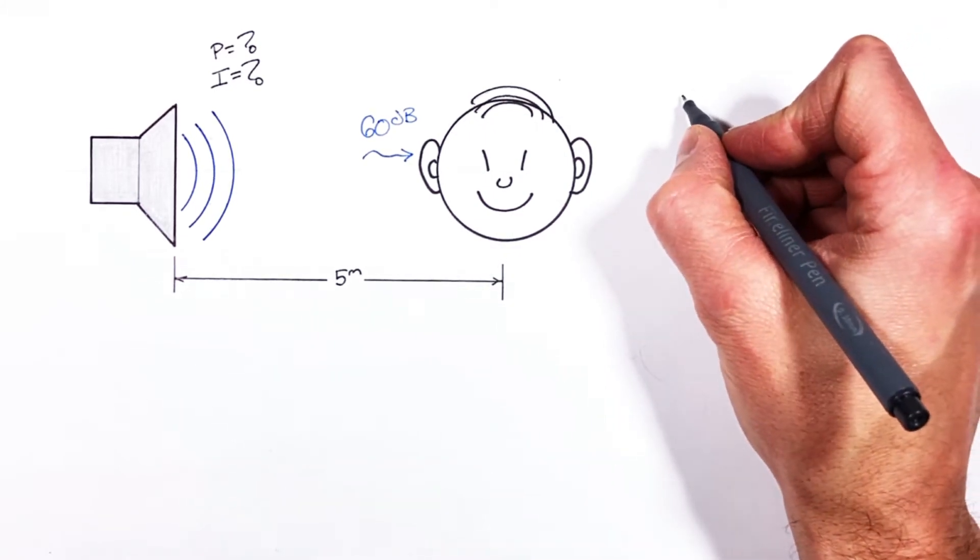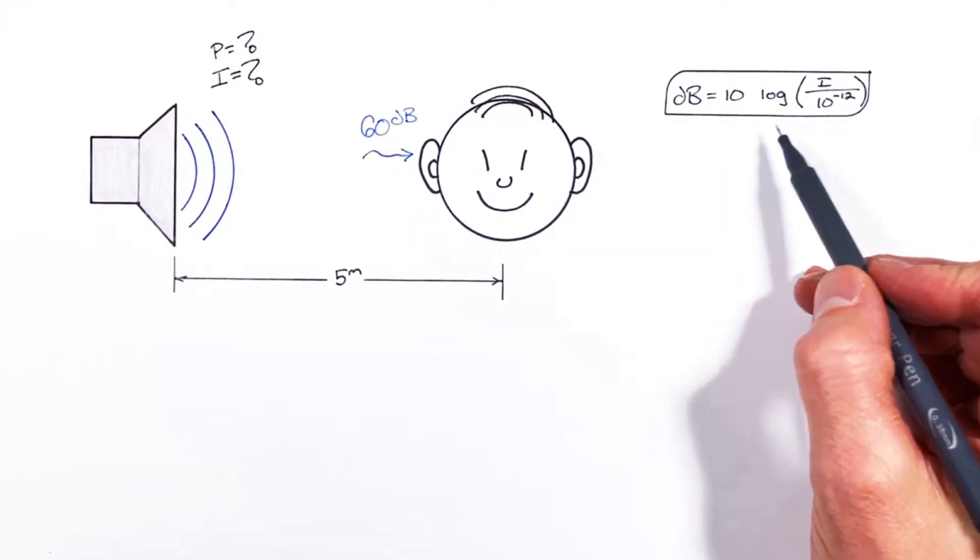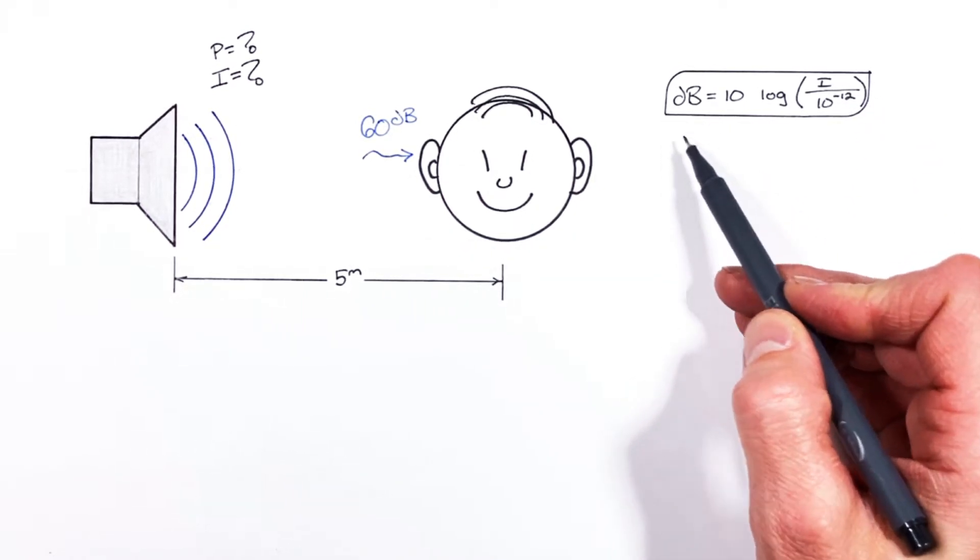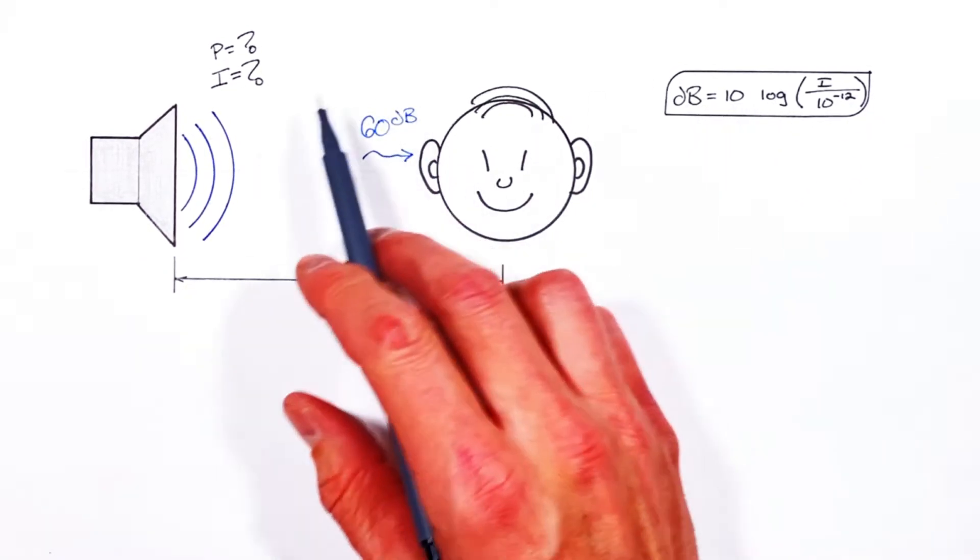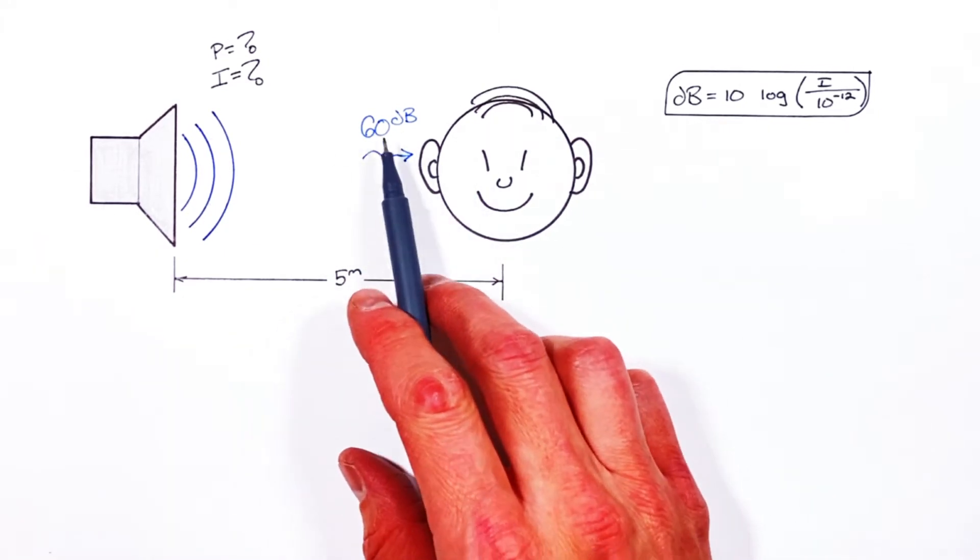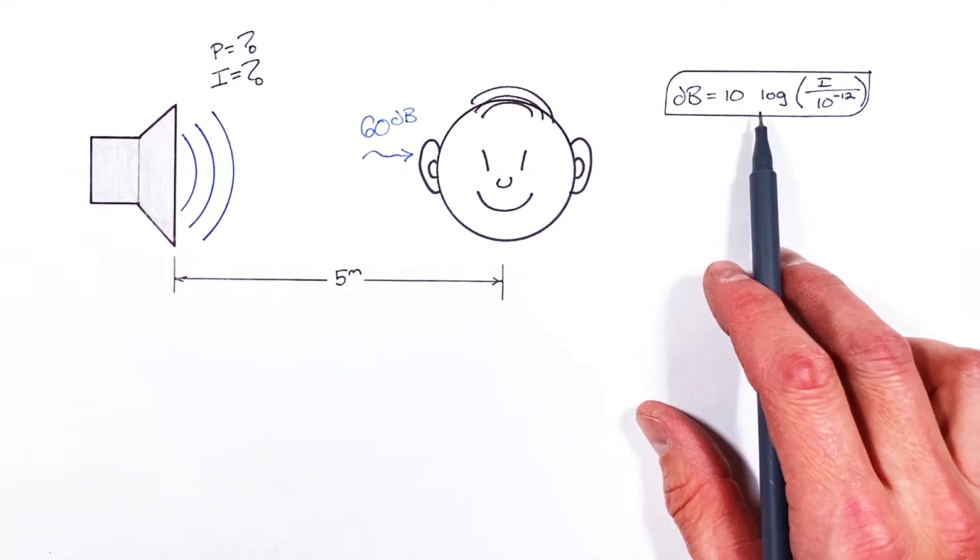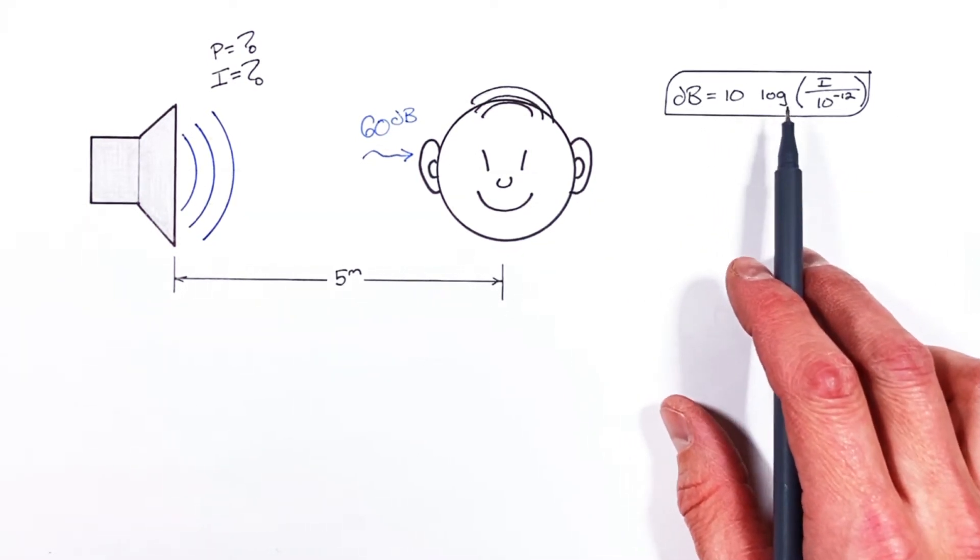Now decibel level is given by this equation. When you're given an intensity and asked to solve for decibels that can be an easy deal. The problem is in this situation we've been given the decibels and we're being asked to solve for the intensity and the math there can create some problems. So I'm going to run through this and show you how to do it.